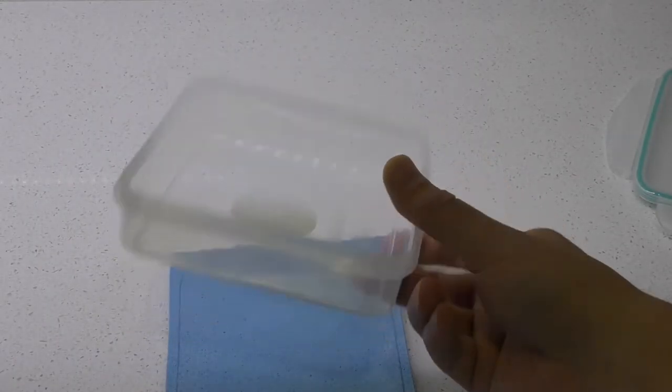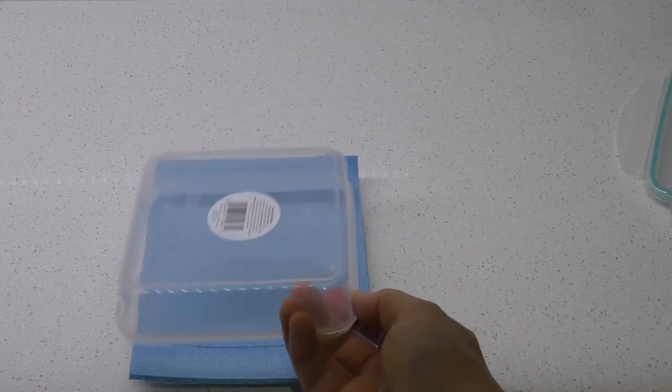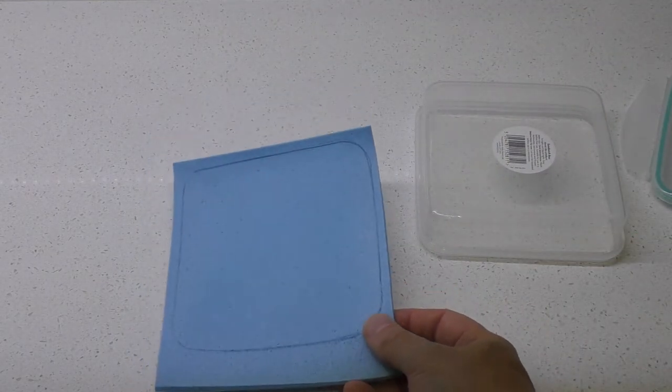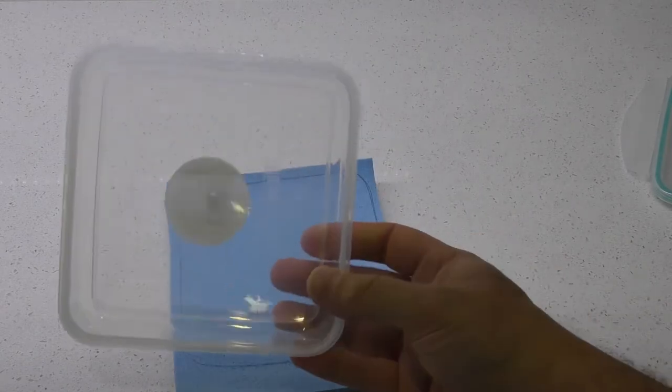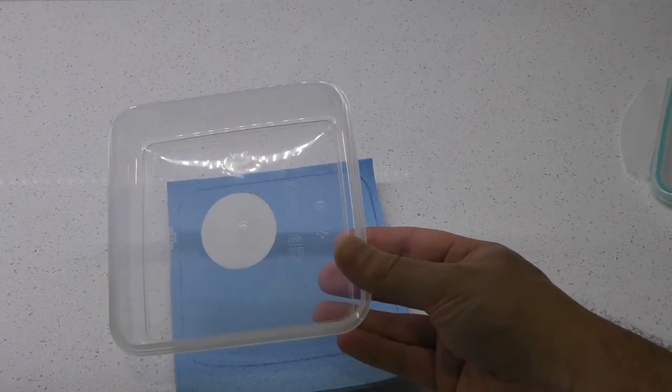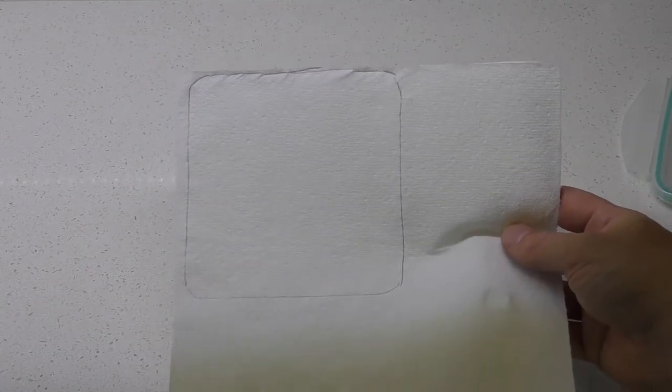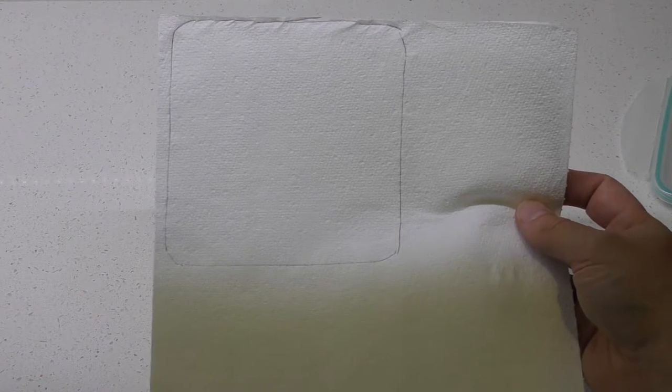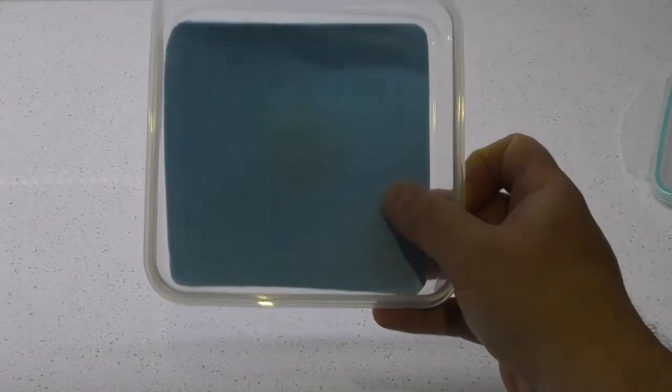Start by taking the lid off the sandwich box, and if you take one of these sponges, pop it upside down on top and draw around it. Then what we're going to do is cut out about two or three millimeters inside of that line. The idea is we're going to make it so it fits quite snug in the bottom of this. If you're not using the sponge, get yourself four sheets of kitchen paper and do exactly the same thing, cutting them out about two millimeters in from that line.